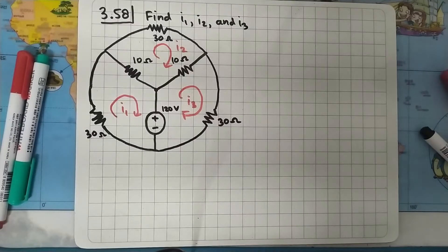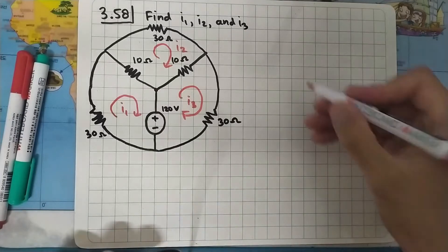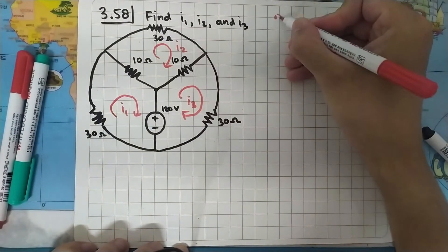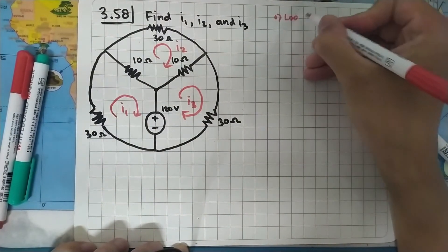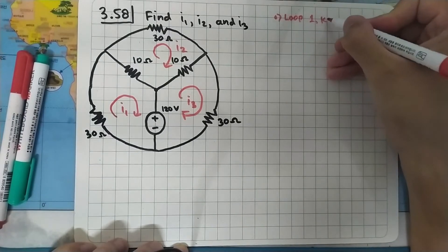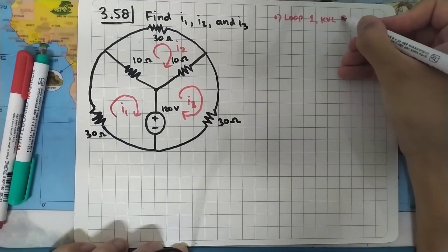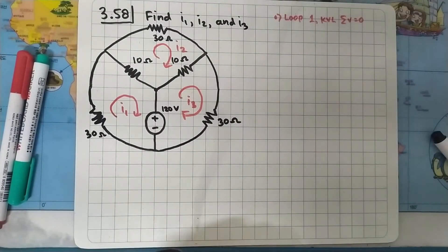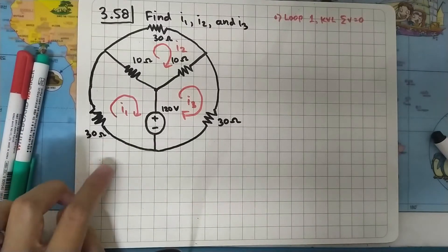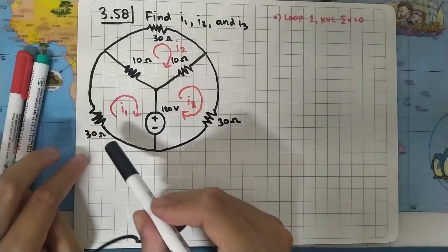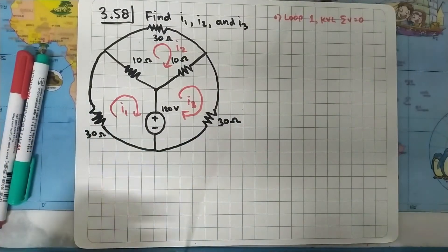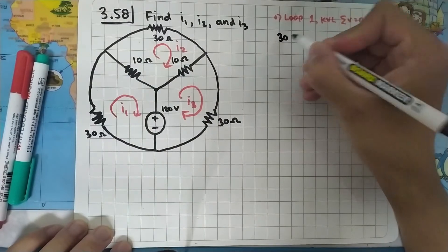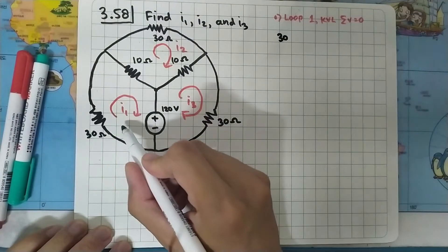Let's start by doing mesh analysis at Loop 1. As usual, we are using KVL, which states that the sum of voltages in a loop is equal to zero.